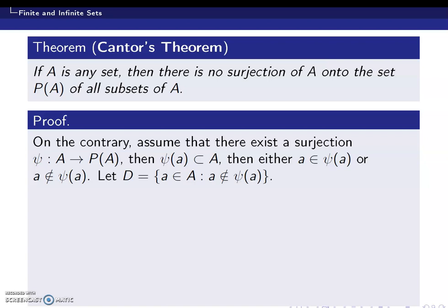Let's move on to the proof. We have to prove that there exists no surjection from A onto P(A). We assume that there exists a surjection, and the idea is that if we proceed with a surjection from A onto P(A), at some point we get a contradiction — meaning our assumption must be wrong, so there exists no surjection from A to P(A).